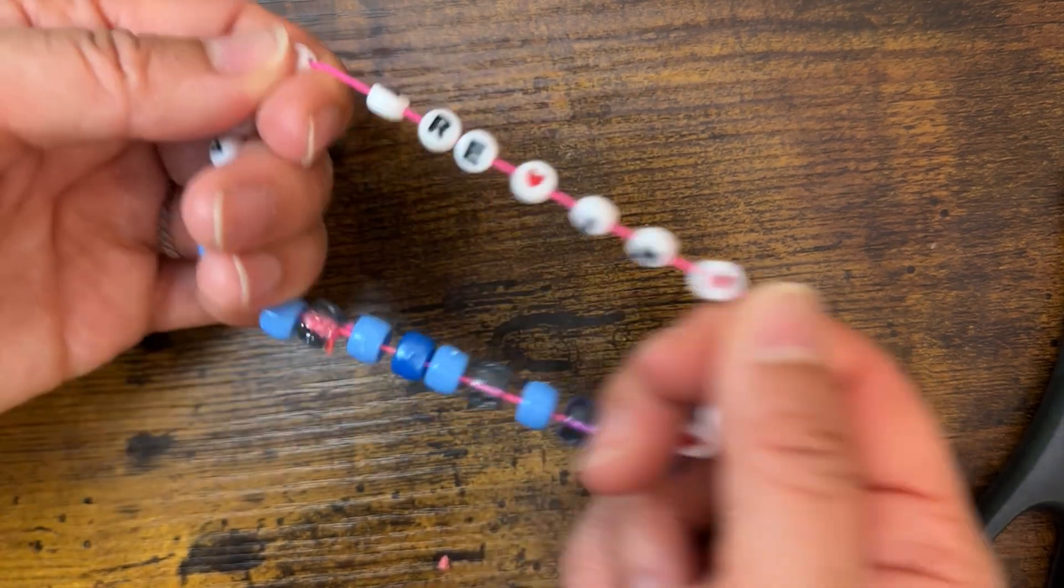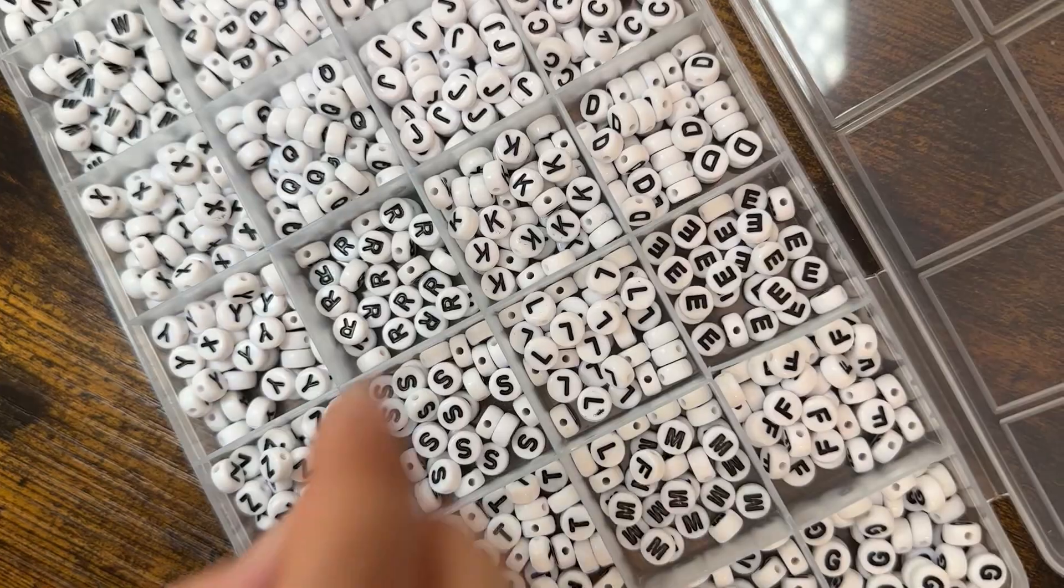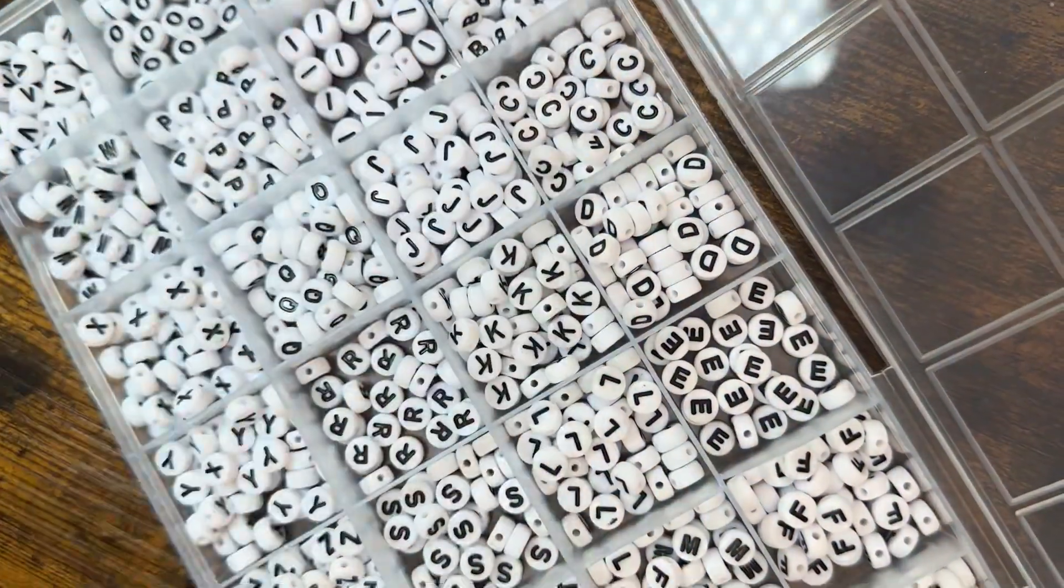This is how I make my Eras Tour friendship bracelets really strong so they do not break and they last a long time. You want to make sure to buy beads that are separated so it saves you time.